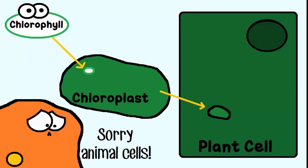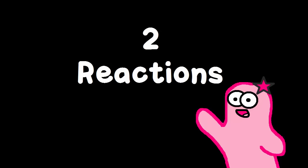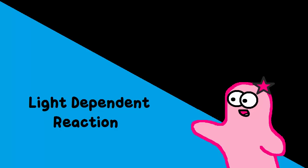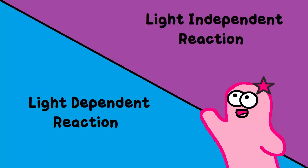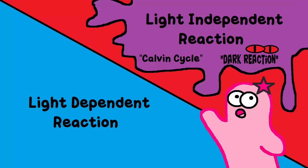This amazing organelle is not found in animal cells. There are two major reactions that occur in the chloroplast that, together, make up photosynthesis: the light-dependent reaction and the light-independent reaction. The light-independent reaction, by the way, is also called the Calvin cycle, or dark reaction. So let's talk about these two reactions.